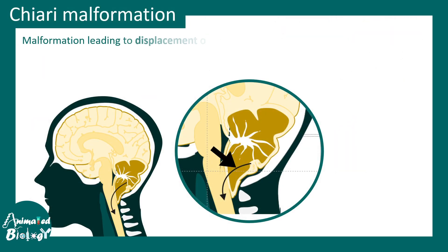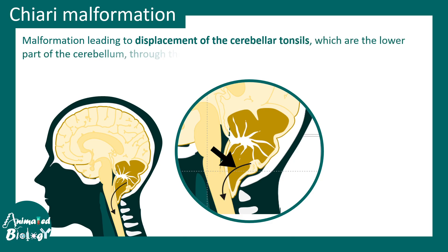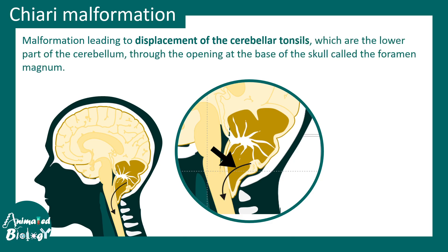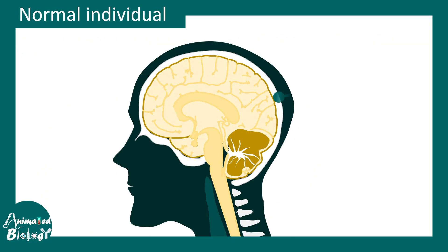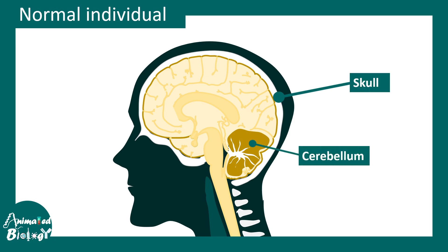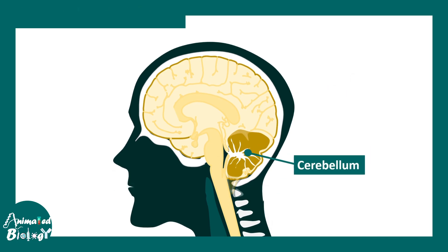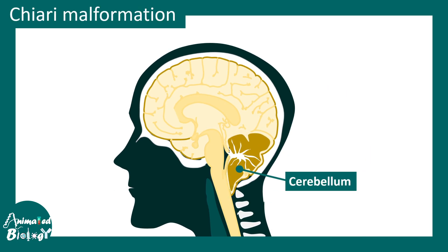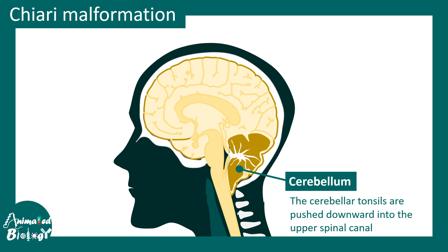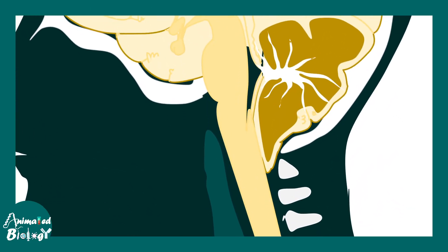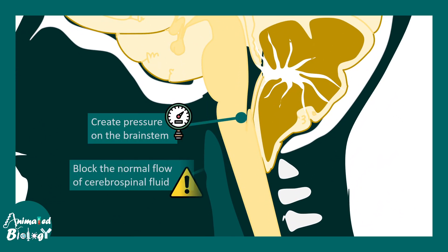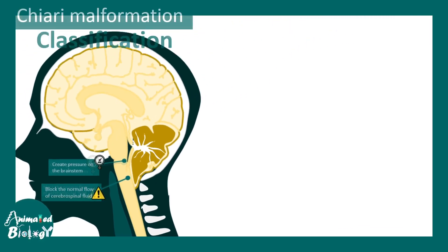Chiari malformation is due to the displacement of a portion of the cerebellum through the foramen magnum. The cerebellum slides down through the foramen magnum into the spinal canal. This leads to excessive pressure on the brainstem and it blocks the normal flow of cerebrospinal fluid.